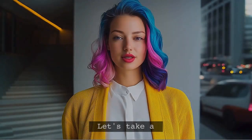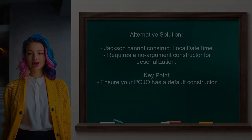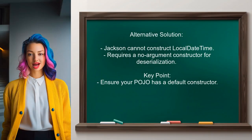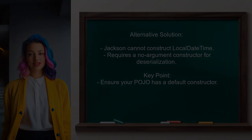Another answer highlights that Jackson, the JSON engine, cannot construct an instance of LocalDateTime because it lacks a no-argument constructor. This means that when deserializing, Jackson needs a default constructor to create the object.